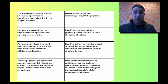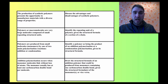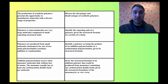You need to be able to discuss the advantages and disadvantages of synthetic polymers, identify repeating structures of polymers, identify whether a polymer is produced from an addition or condensation polymerization, and draw the structural formula of an addition polymer that could be produced from monomers containing one carbon-carbon double bond, given the structural formula.